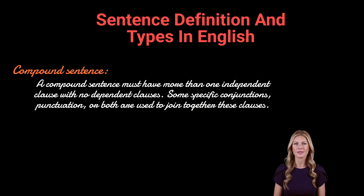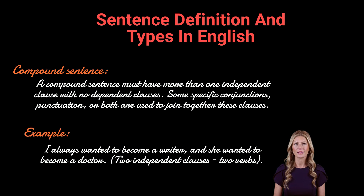A compound sentence must have more than one independent clause with no dependent clauses. Some specific conjunctions, punctuation, or both are used to join together these clauses. Example: 'I always wanted to become a writer, and she wanted to become a doctor.' — two independent clauses, two verbs.